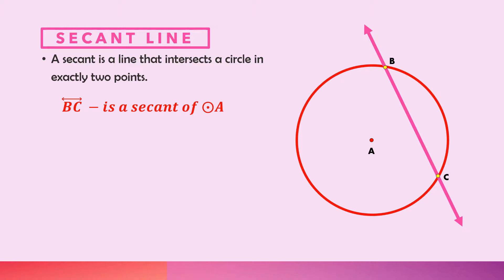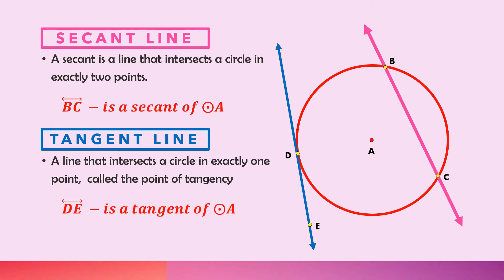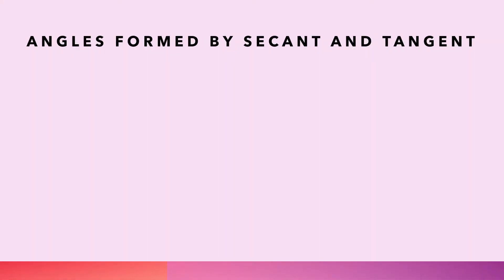The tangent line is a line that intersects a circle in exactly one point, which is called the point of tangency. So if we have a line intersecting the circle at exactly one point, which is point D, then we can say that line DE is a tangent of circle A, and point D is the point of tangency of tangent DE.